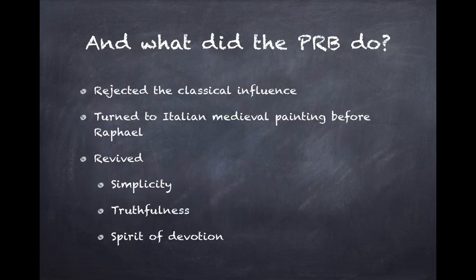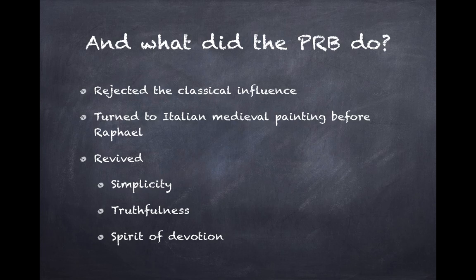This was rejected by the Pre-Raphaelite Brotherhood. The PRB was founded in 1848, and they rejected the classical influence of Joshua Reynolds that went back to the Renaissance. Instead, they turned to Italian painting of the medieval period, before Raphael and before the High Renaissance. So there is a medievalism in Pre-Raphaelite paintings and poetry. In Pre-Raphaelite paintings and poetry there are mainly two elements: stark realism and medievalism. The PRB revived the simplicity, truthfulness, and spirit of devotion of Italian medieval painting before Raphael. Their paintings are simple, starkly truthful, and show religious devotion.